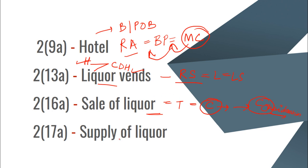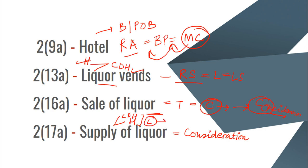Now subsection 17a defines supply of liquor. Supply means when liquor is provided for consideration — again, consideration is the important ingredient — but here it is provided not to a purchaser directly. Instead, it is provided either at hotels or at common drinking houses, and both must have a license, and the liquor is consumed within the premises of that hotel or common drinking house.